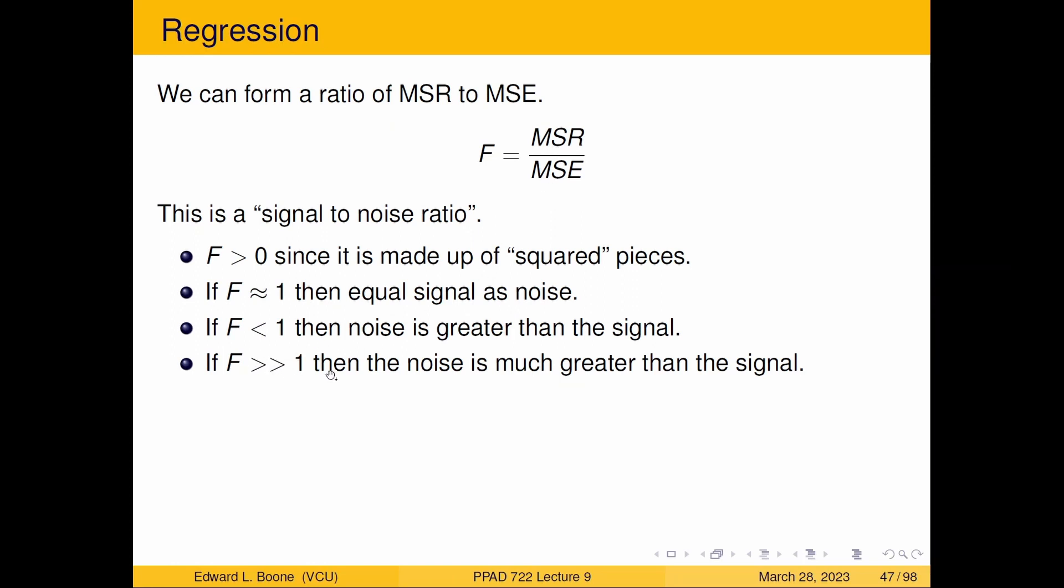If F is much greater than one, then the signal is much greater than the noise. And this is where we're interested. This is the case where if it's much larger than one, then we know that it would be statistically significant. Something is in there worth finding. So I usually just pay attention a lot to the F because the F gives me how much signal I have relative to the noise. And that's useful information to have.